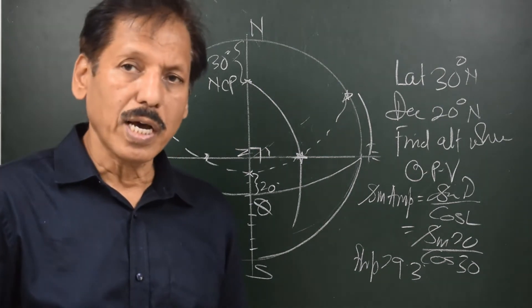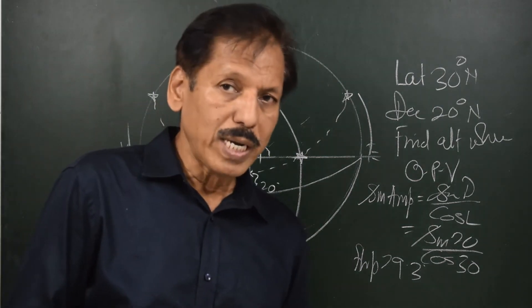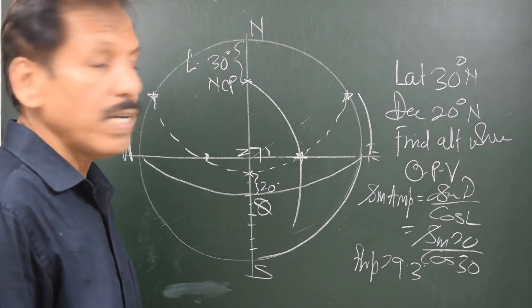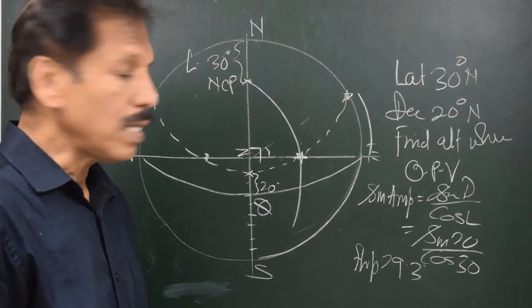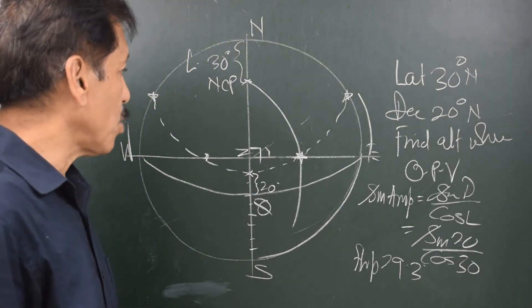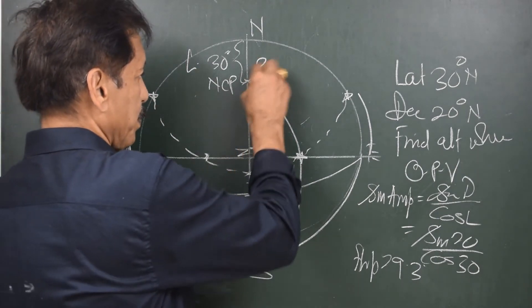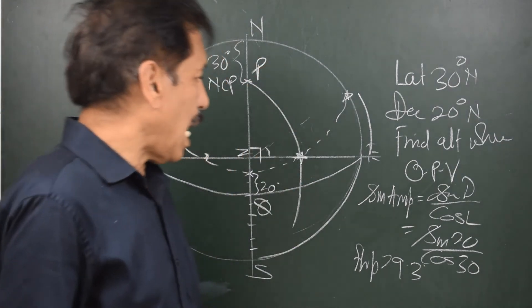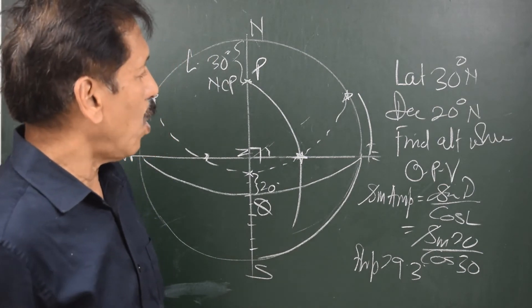And if you have understood the diagram, you should be able to do the numerical. Now, we have already identified right-angled triangle in this particular diagram that is Pzx. Now, what is asked is, find the altitude.